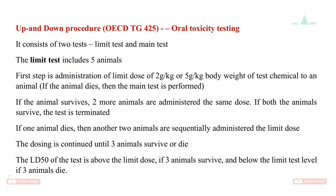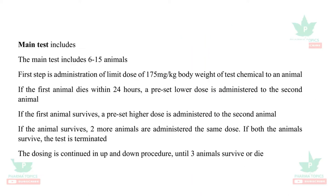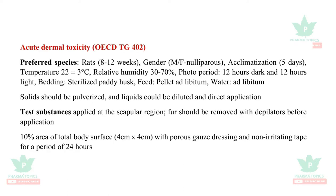The up and down procedure, guideline 425, involves a limit test with five animals. The first step is administration of a limit dose of 2000 mg/kg or 5000 mg/kg. If the animal survives, two more animals are administered the same dose. If both animals survive, the test is terminated. If one animal dies, another two animals are sequentially administered the limit dose. Dosing continues until three animals survive or three animals die. The LD50 is above the limit dose if three animals survive and below if three animals die. The main test includes 6 to 15 animals; the first dose is 175 mg/kg following the same sequential procedure.